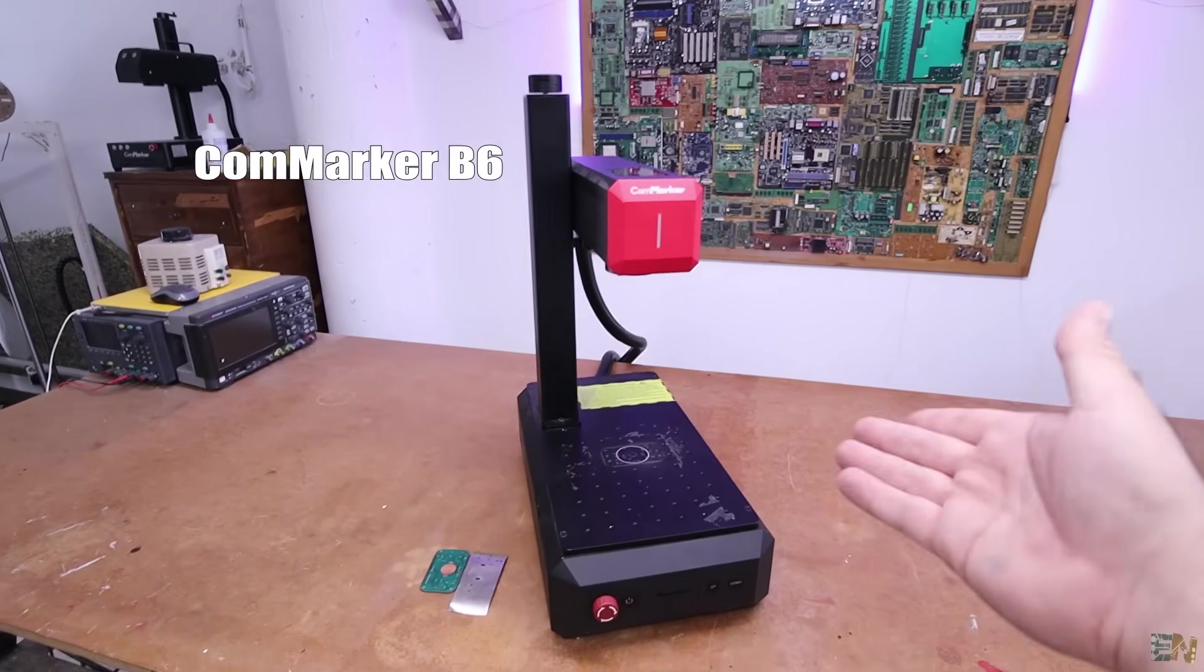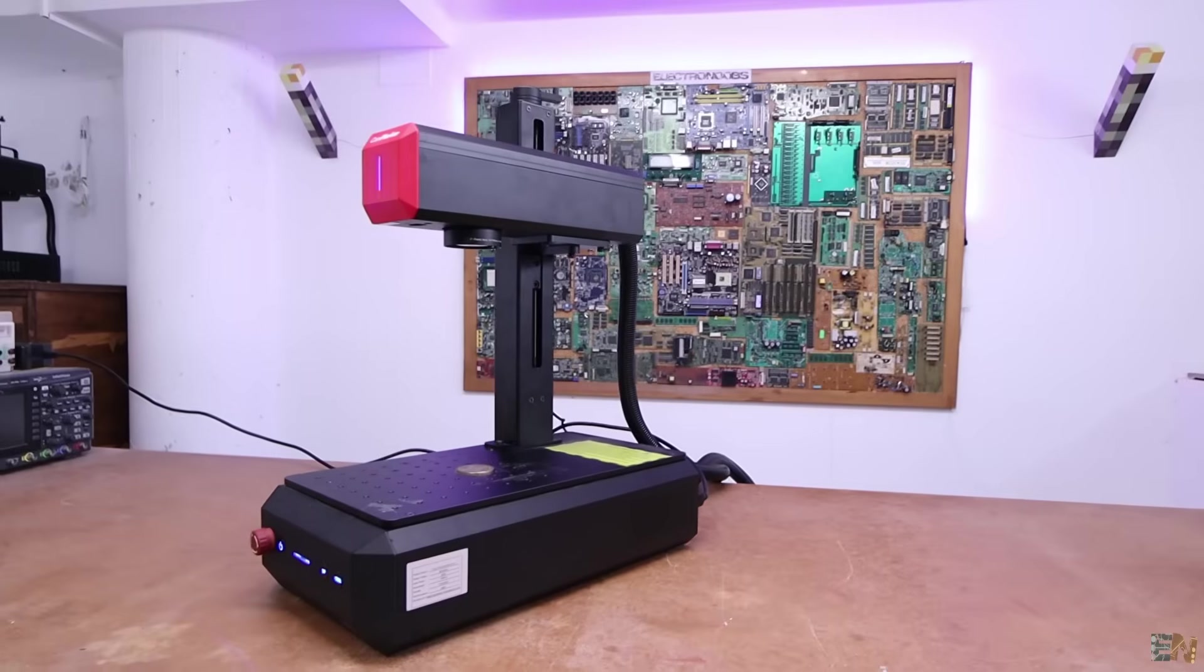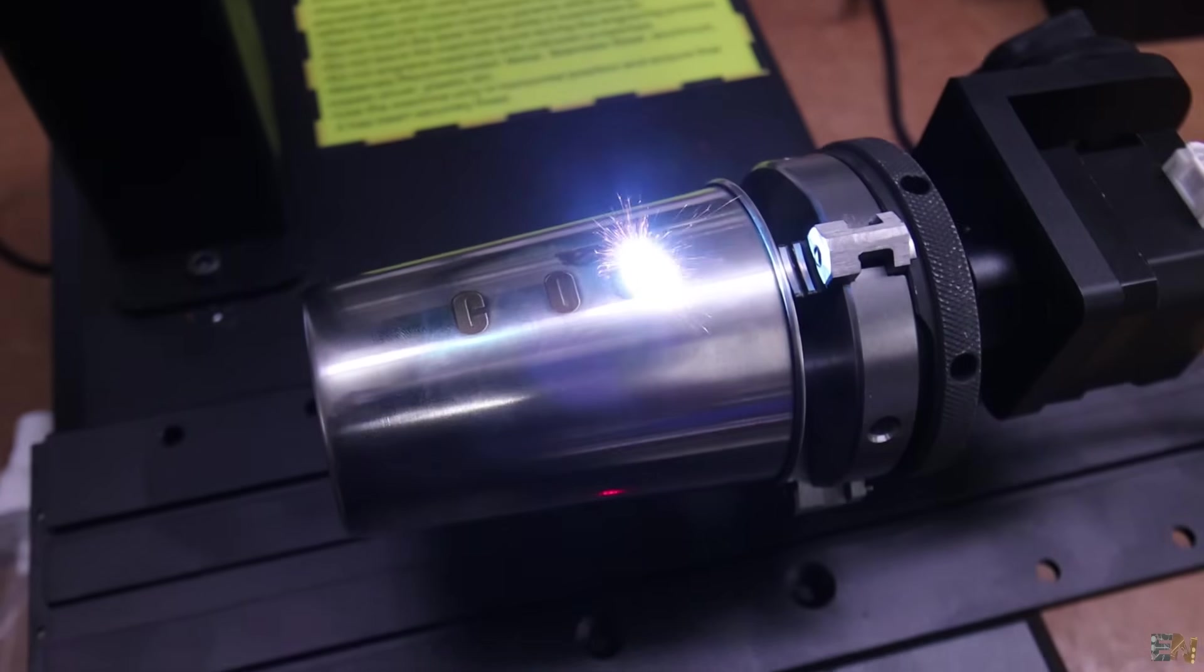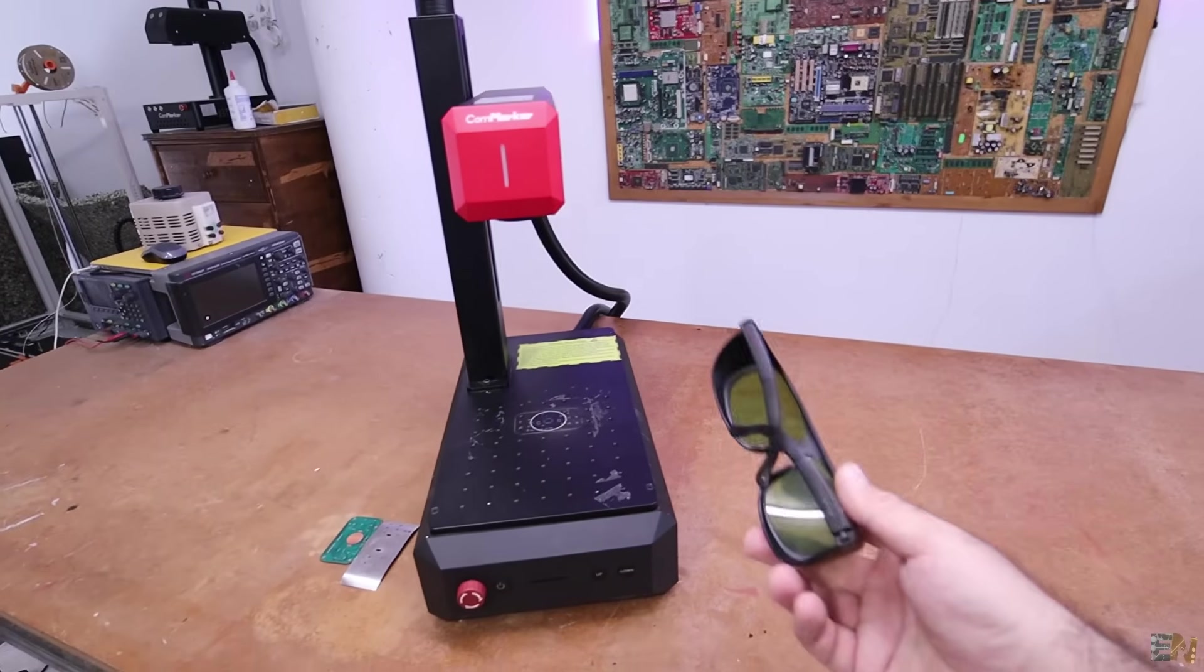This is the CamMaker B6 fiber laser engraver and this time is of 60 watts. Damn that's a lot of power so please be careful and always wear your goggles.